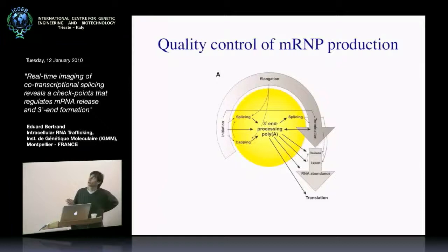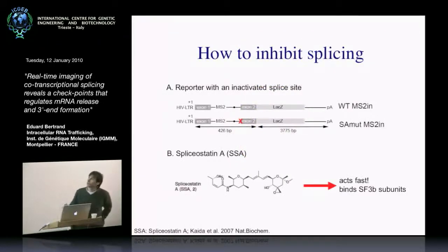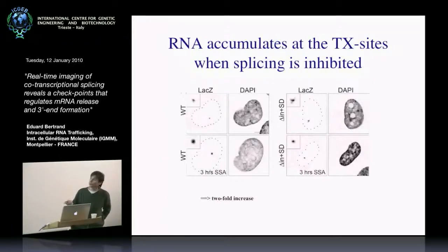Now I'll tell you a second story about quality control of mRNA production. Most steps in the mRNA production pathway are interconnected, and all these interconnections are used as checkpoints to make sure transcription is properly done. The story starts with the same reporter and spliceostatin. When we put spliceostatin on our reporter, the transcription site of the reporter RNA becomes brighter — on average a two-fold increase of RNA at the transcription site. This increase is dependent on splicing, because if you take the same reporter without the intron and treat it with spliceostatin, there is no effect.